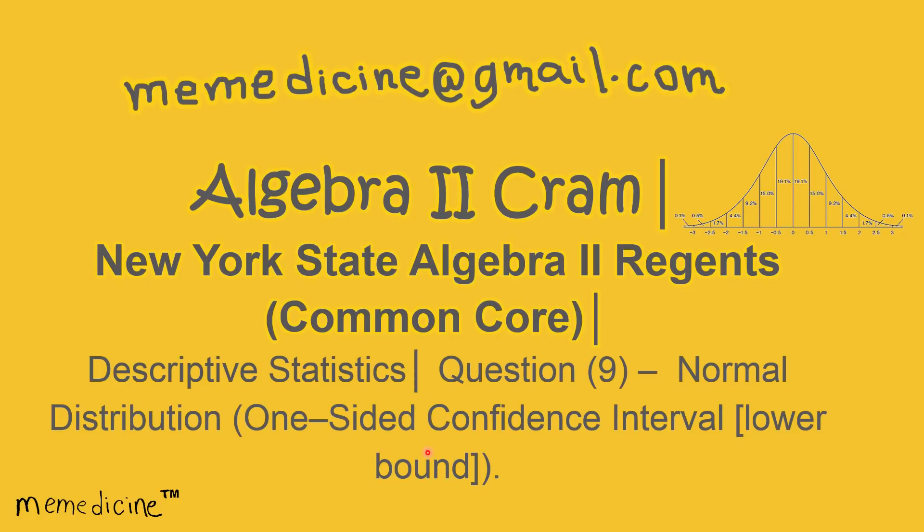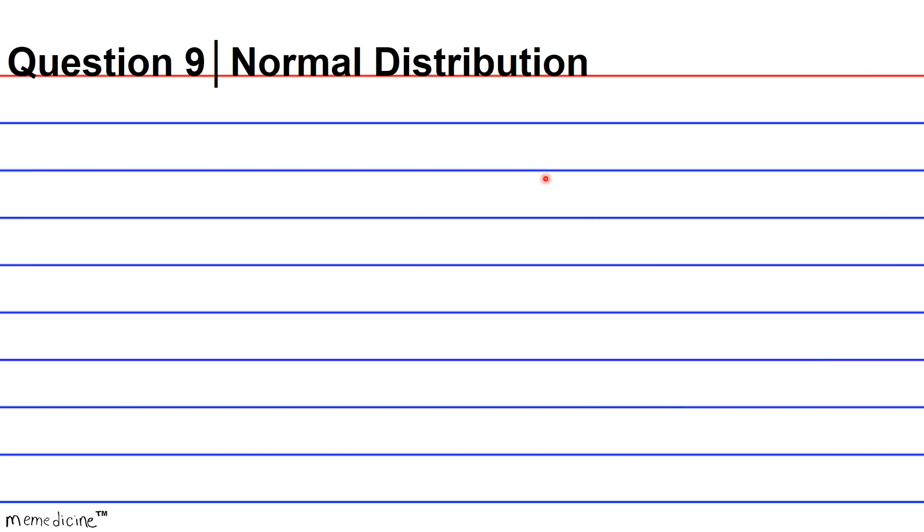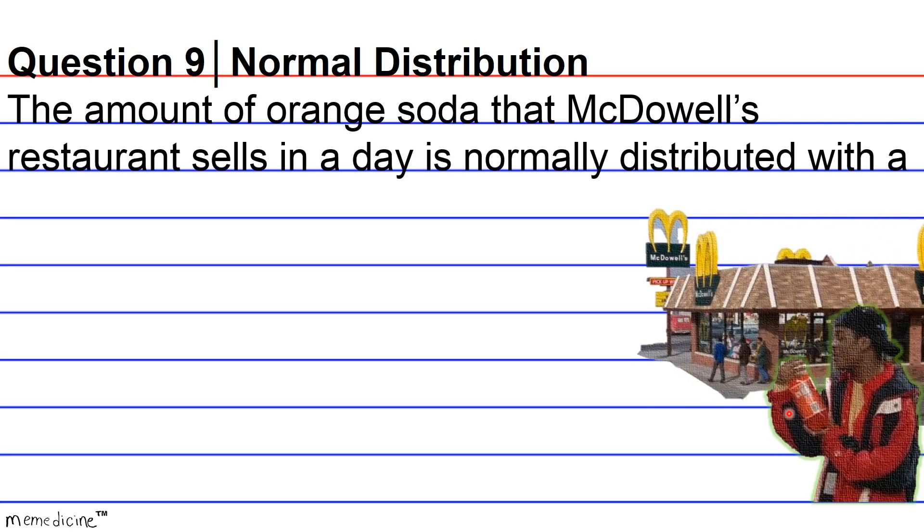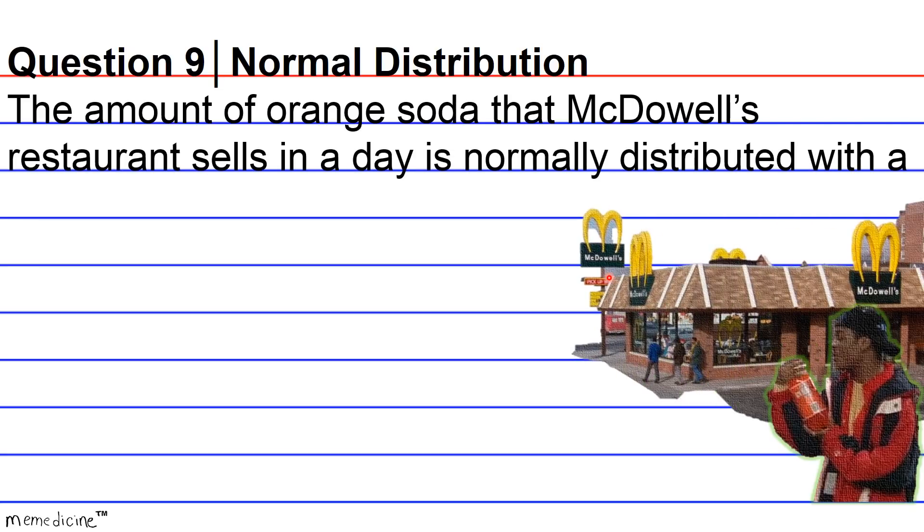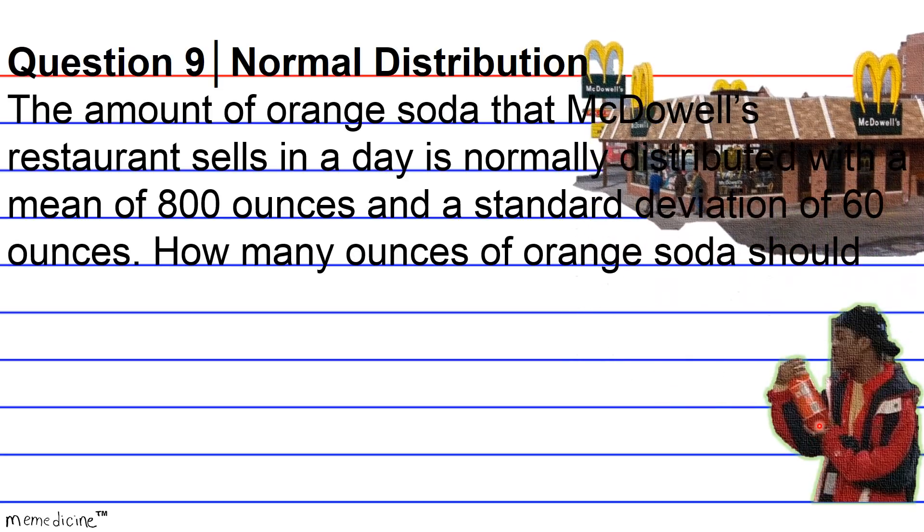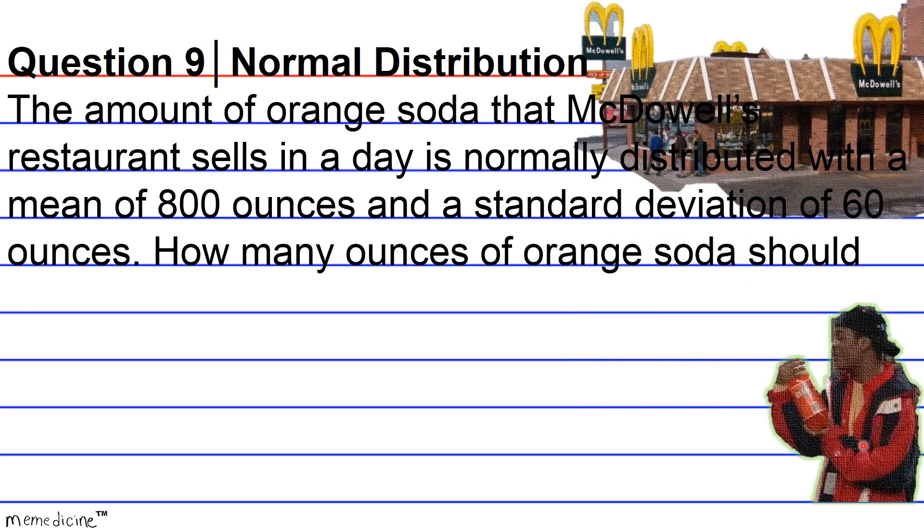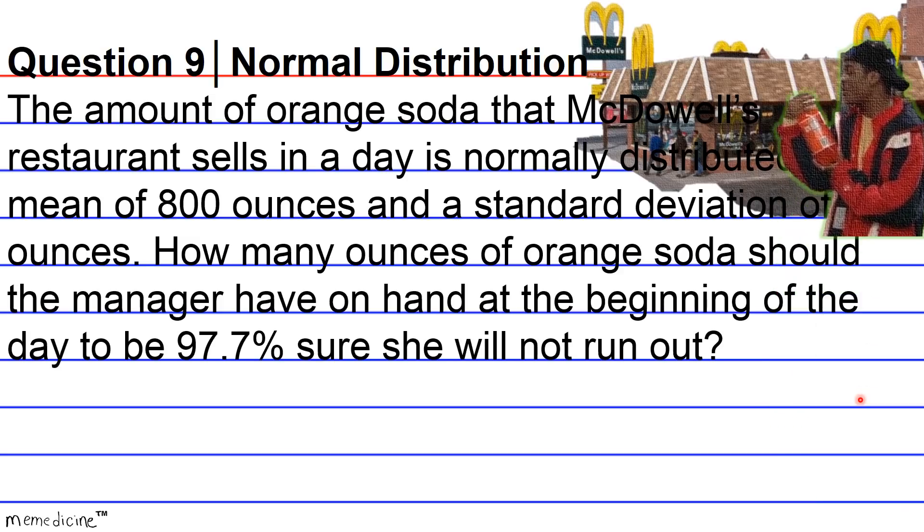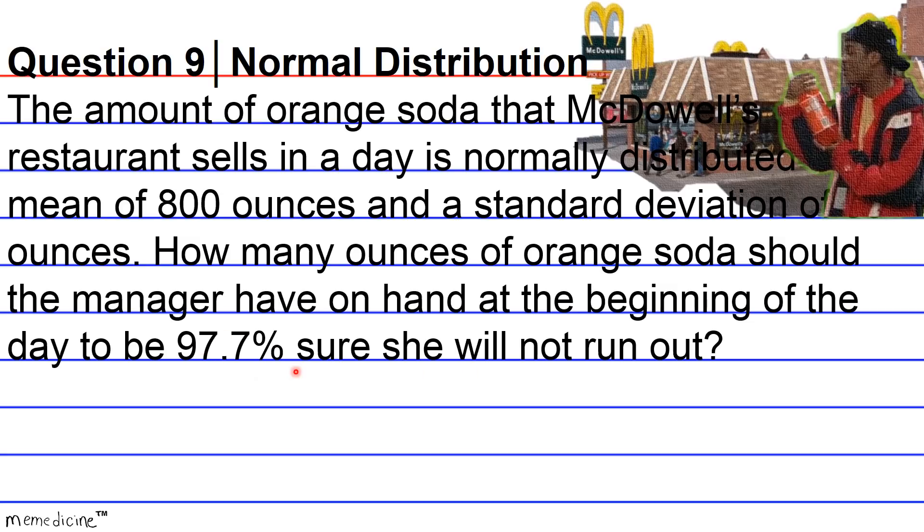Let's delve into the question. Question 9, Normal Distribution. The amount of orange soda that McDowell's restaurant sells in a day is normally distributed with a mean of 800 ounces and a standard deviation of 60 ounces. How many ounces of orange soda should the manager have on hand at the beginning of the day to be 97.7% sure she will not run out?